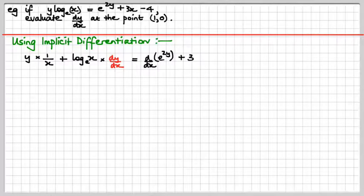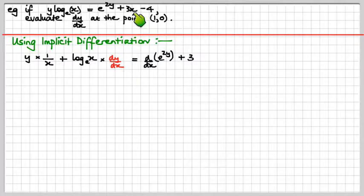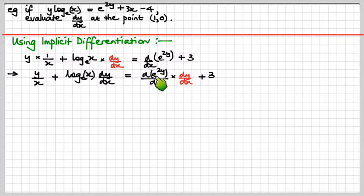Using implicit differentiation, for the product rule part we get left d right plus right d left — the right d left part gives us a dy/dx. The 3x term gives us 3, the constant 4 gives nothing. For the exponential term e to the 2y, by the chain rule it's the derivative with respect to y of e to the 2y, times dy/dx. The derivative of e to the 2y with respect to y is 2 times e to the 2y.